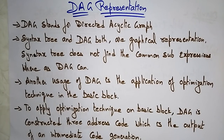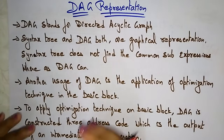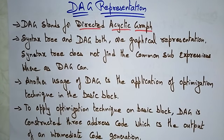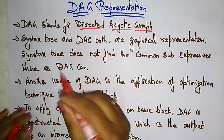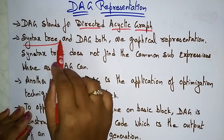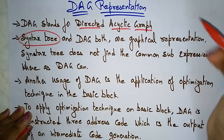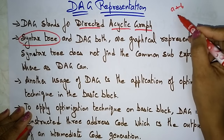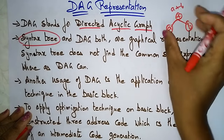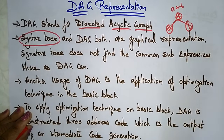Welcome back. Coming to the next topic in compiler design: DAG representation. DAG stands for Directed Acyclic Graph. It is a directed acyclic graph. Both the syntax tree and DAG are graphical representations. The syntax tree represents the parse tree — for example, if you have 'a + b', the tree has '+' at the top with 'a' and 'b' as children.